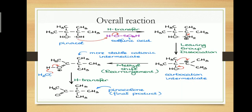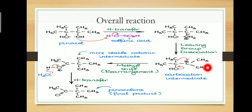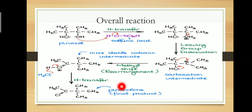So this is the overall reaction. Step 1 is proton abstraction from an acid. Step 2 is dissociation and formation of a carbocation. Step 3 is the 1,2 methyl shift. Step 4 is again a hydrogen transfer, resulting in the product — the conversion from an alcohol to a keto group. That is the Pinacol-Pinacolone rearrangement.